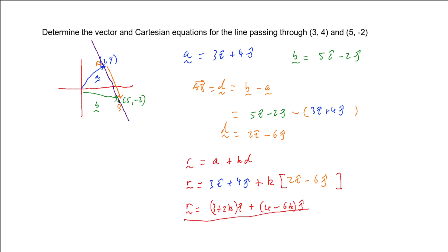And that gives us our vector equation for this line. And we just got to specify that k is an element of the real number system because it can be any number as long as it's real.